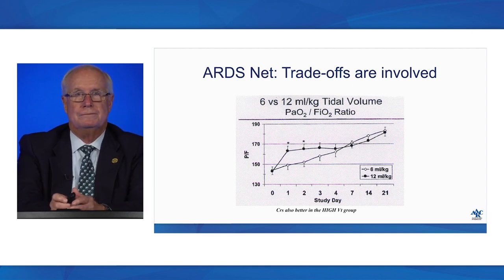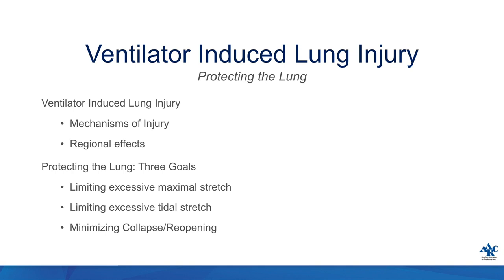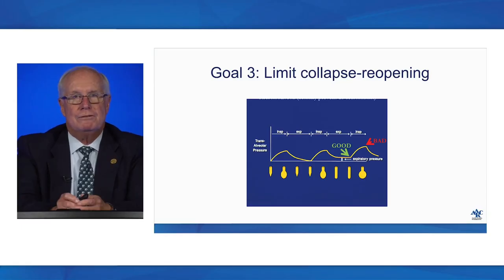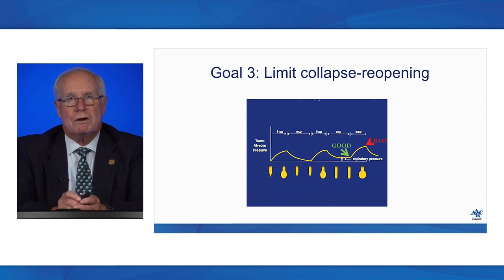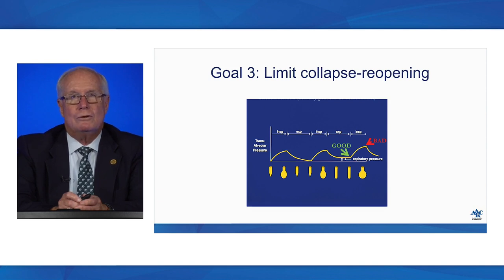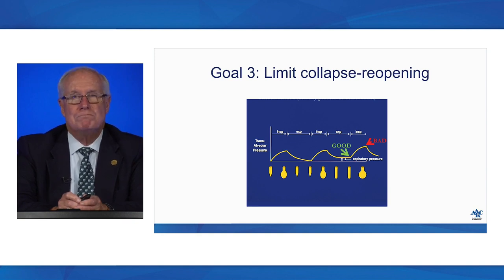Trade-offs are important to recognize. The final goal is to minimize collapse and reopening, which we do with PEEP. This depiction of alveolar behavior shows alveoli collapsing in expiration, inflating with positive pressure, then collapsing again. Adding expiratory pressure maintains the recruitment. The problem is that in alveoli that are not collapsing and reopening, PEEP may serve only to over-distend the lung — which can be very bad. This is the balancing act we play every day in the ICU managing our ventilator patients.